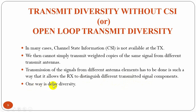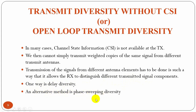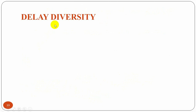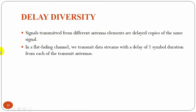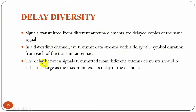One way to implement open-loop transmit diversity is delay diversity, and an alternative method is phase sweeping diversity. In delay diversity, the signals transmitted from different antenna elements are delayed copies of the same signal. In a flat fading channel, we transmit data streams with a delay of one symbol duration from each of the transmit antennas. The delay between signals transmitted from different antenna elements should be at least as large as the maximum excess delay of the channel.